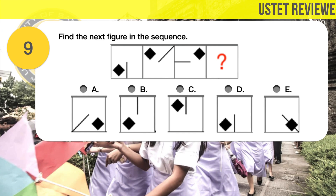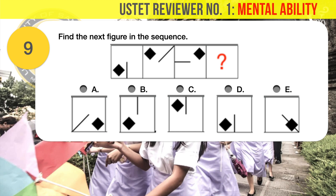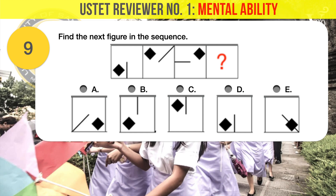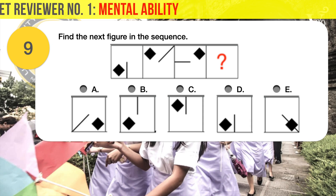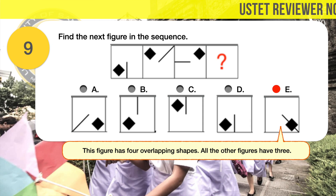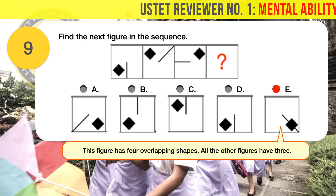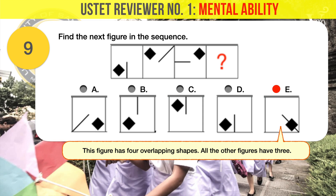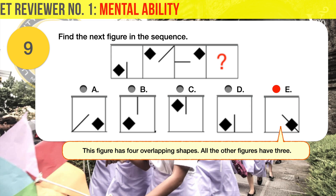Question number 9. Find the next figure in the sequence. The correct answer is E. The line moves three steps — for example, corner to side to corner — in a counterclockwise direction. On the other hand, the square moves one step, from the third quadrant to the second quadrant to the first quadrant, in a clockwise direction. The next figure should have a diagonal line and a square in the lower right corner.